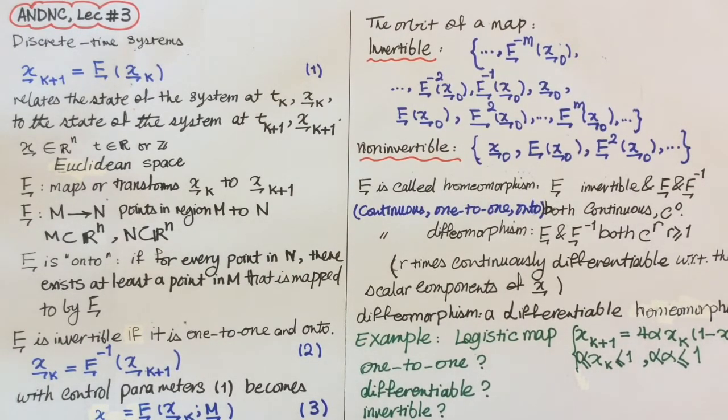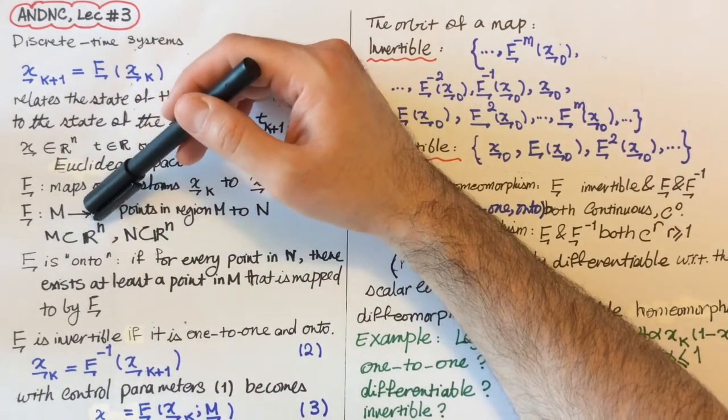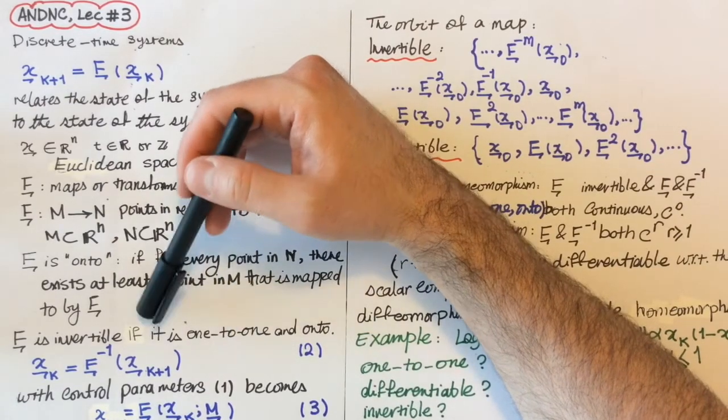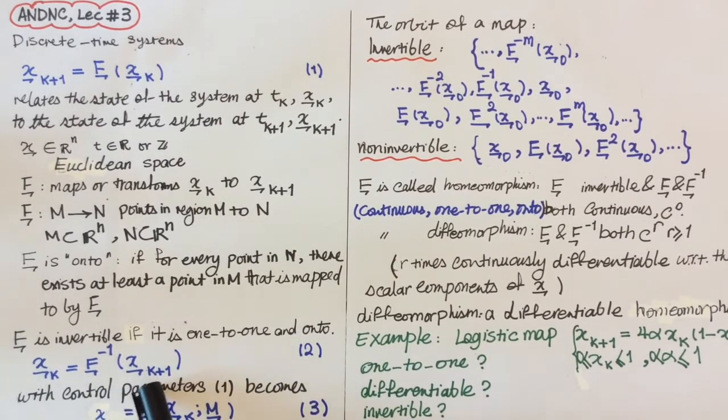Obviously, when we say that, there could be more than one point. But if there is only one point, exactly one point, then that's also one-to-one function F, or a one-to-one map. It is onto if there exists at least one point in M for every point in N, and it is one-to-one if there exists exactly one point. If it is one-to-one and onto, the map is invertible, meaning we can go back and compute x_k from f^{-1}(x_{k+1}).